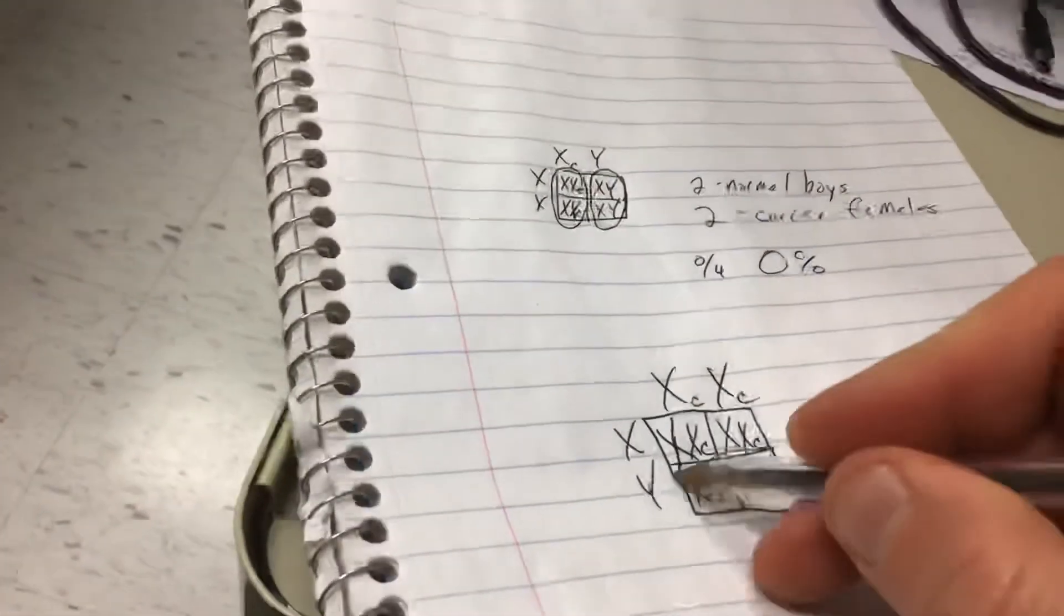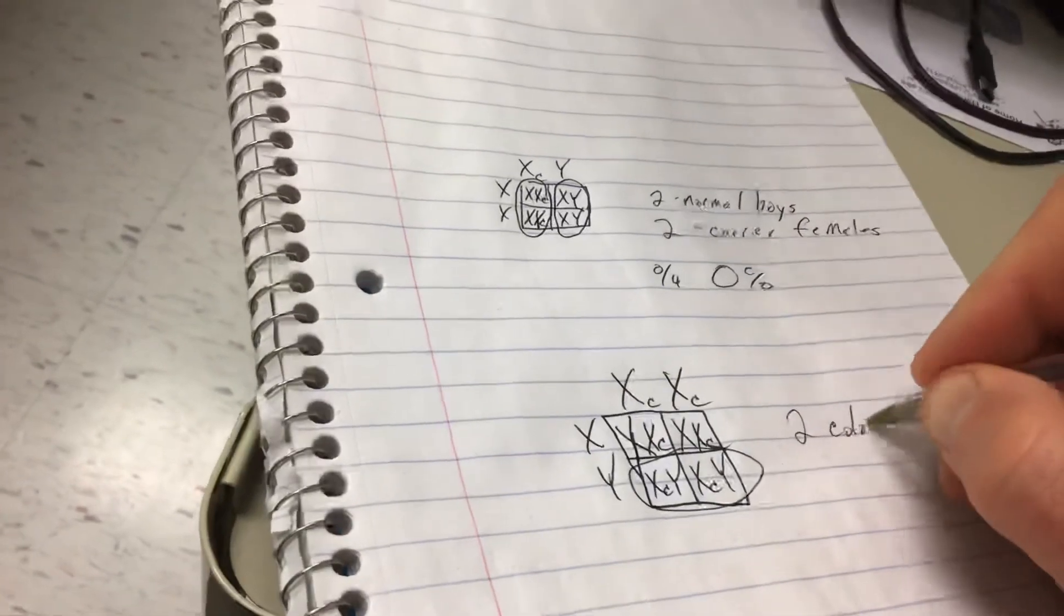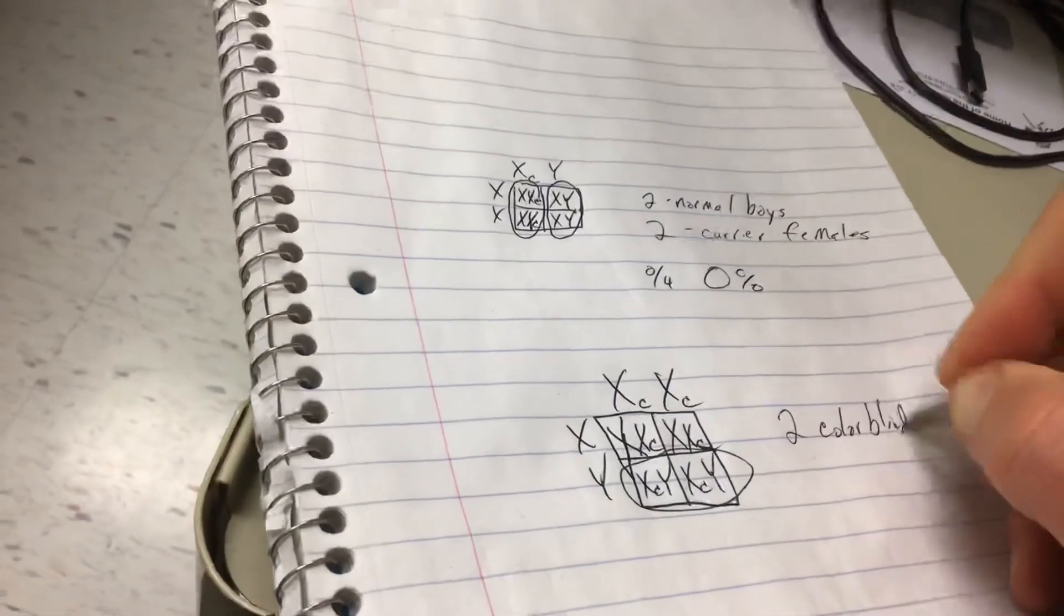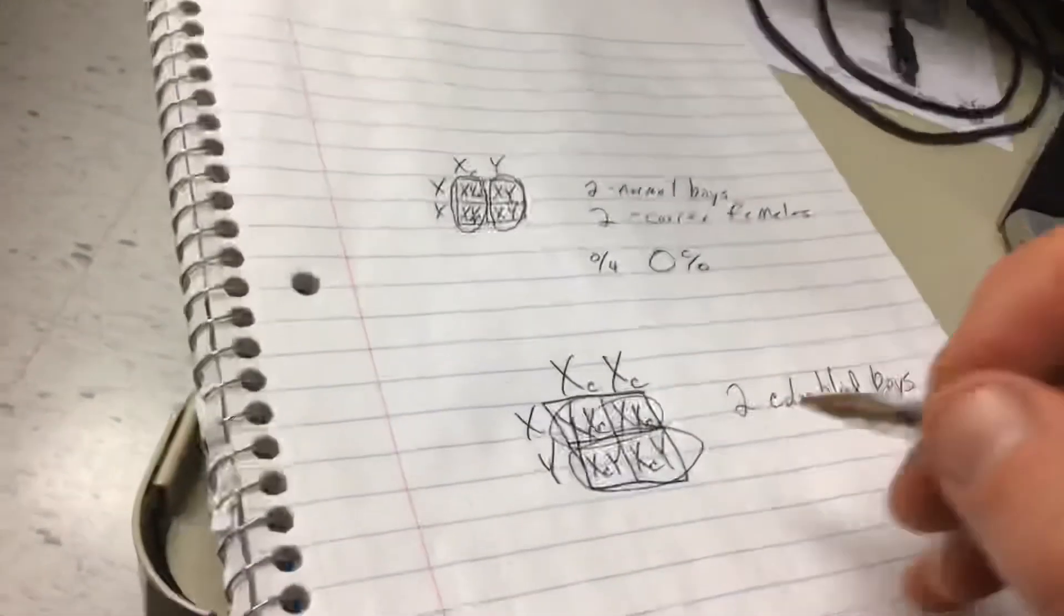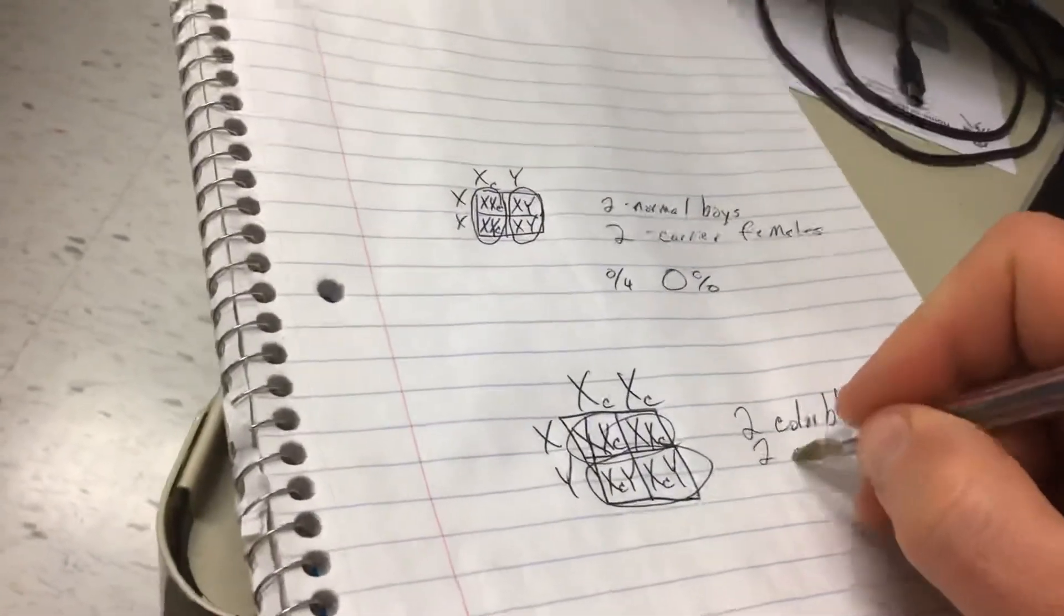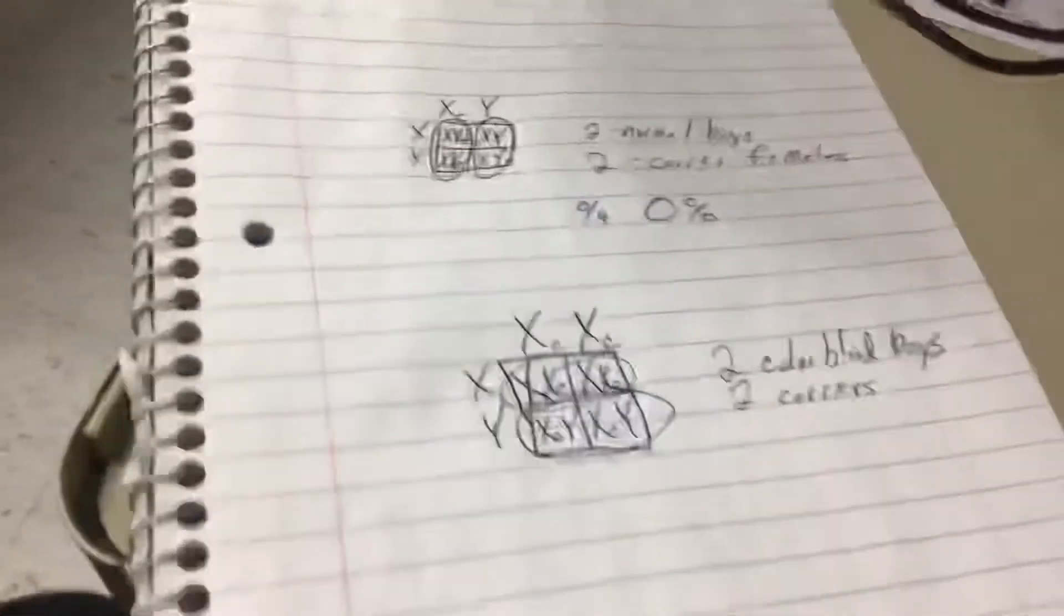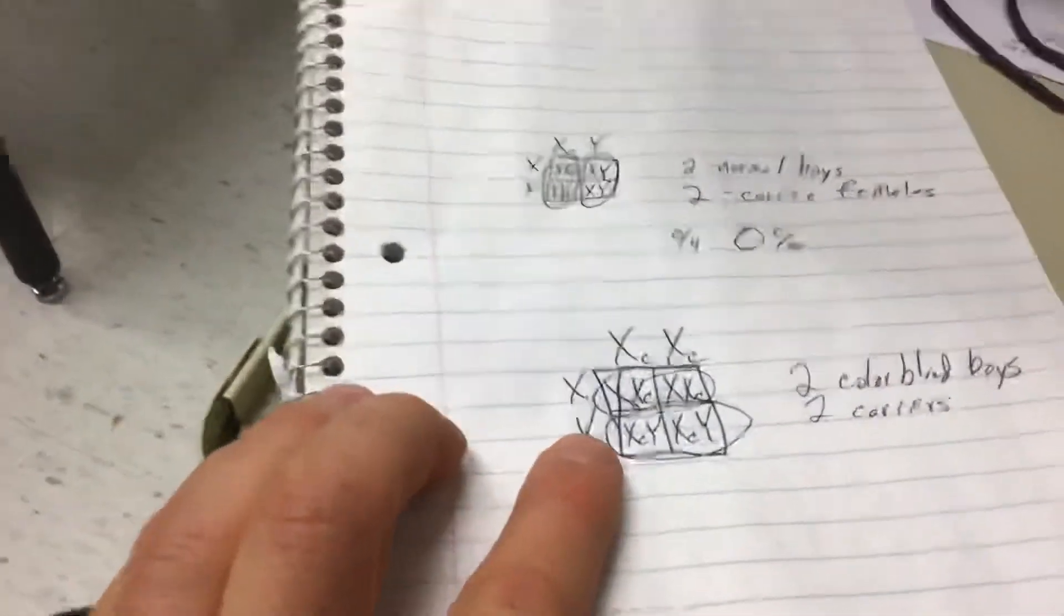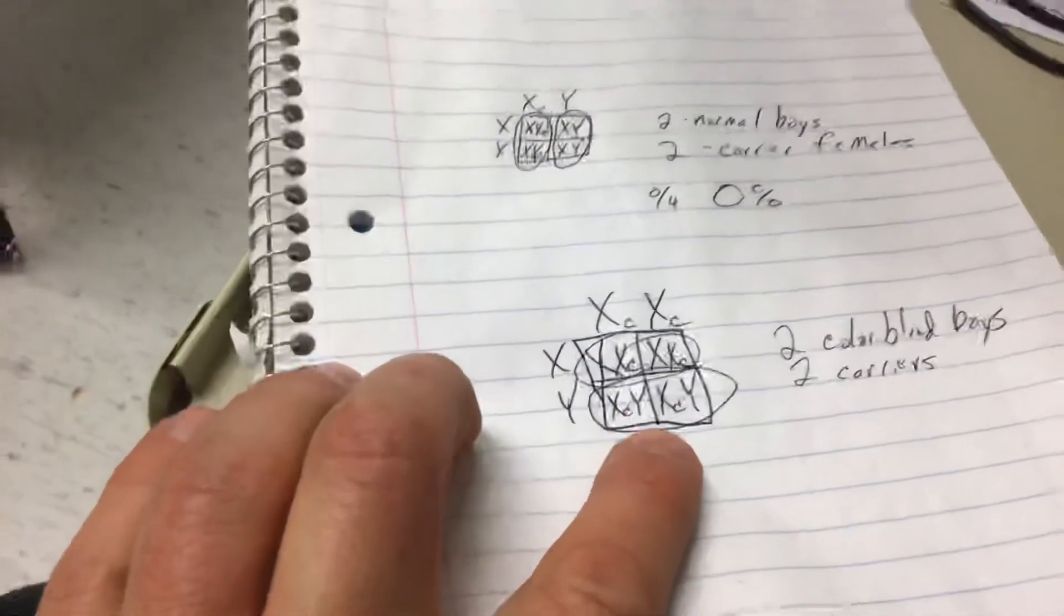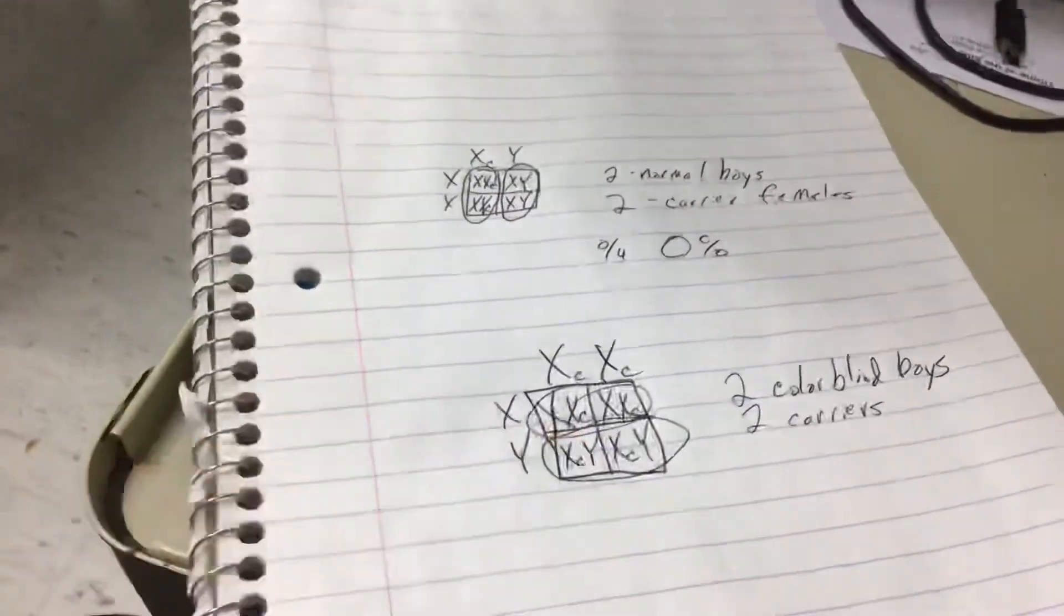These two males are colorblind. Two colorblind boys. These two females are carriers. In this instance, if the mom is colorblind and the dad is not, every boy that they have will be colorblind. Every female, every girl that they have will be a carrier.